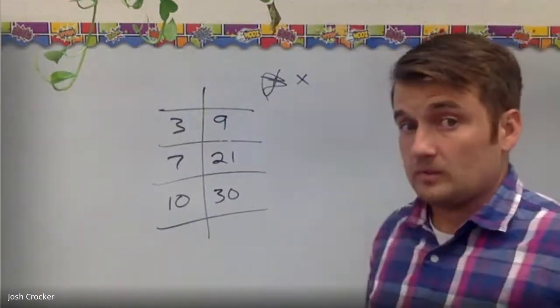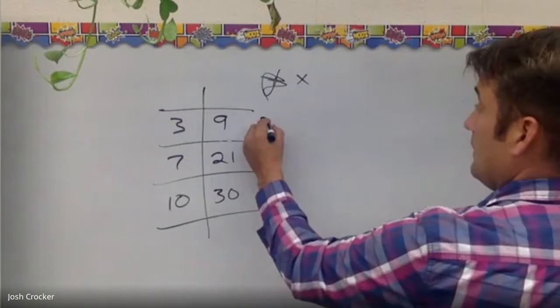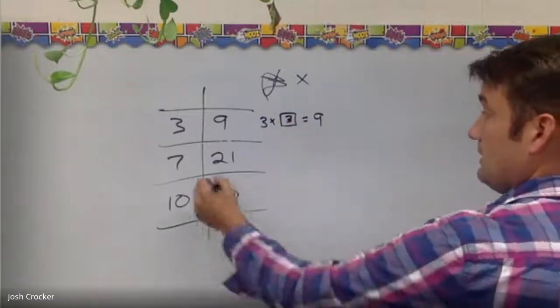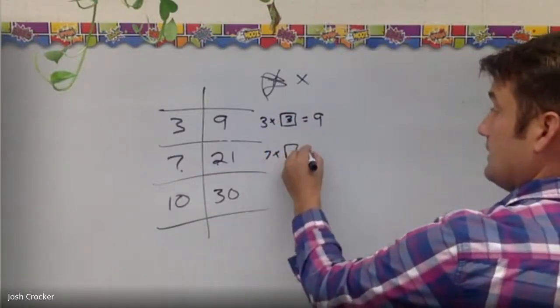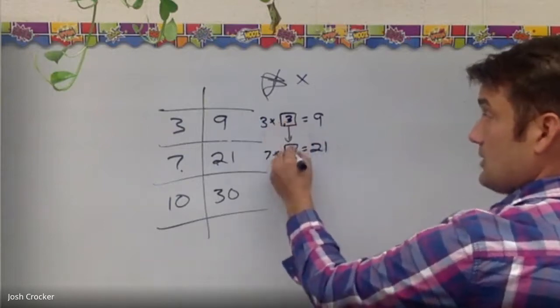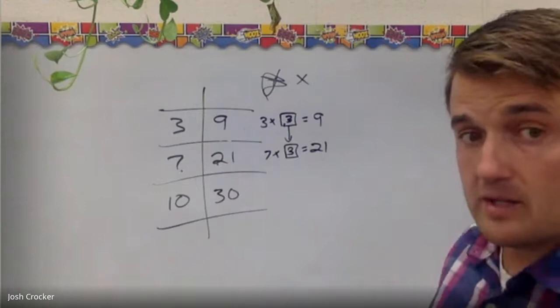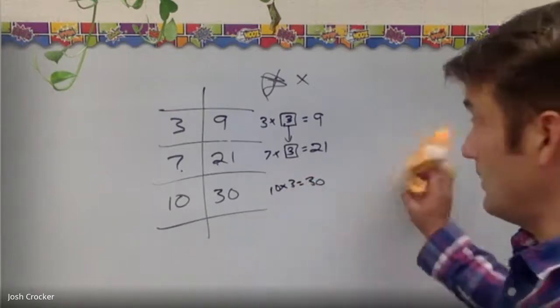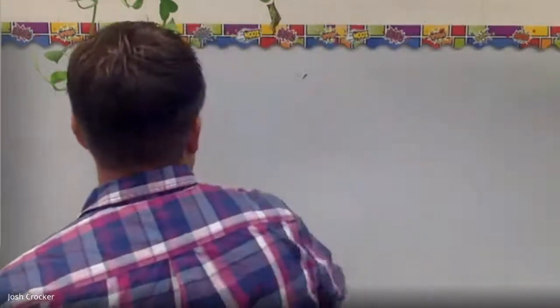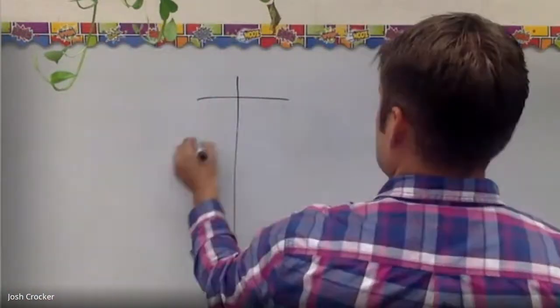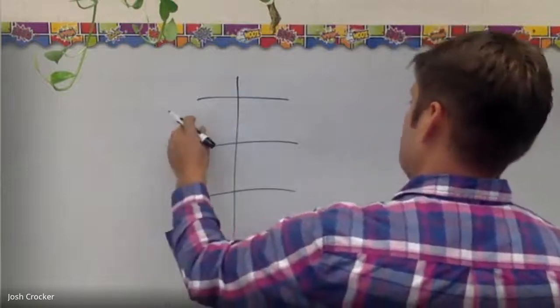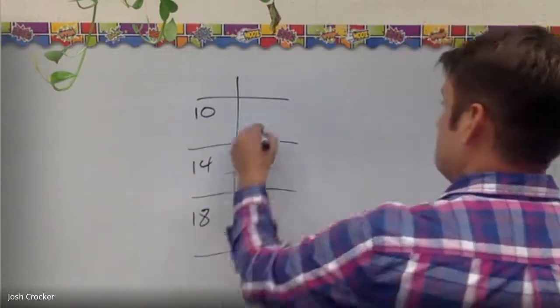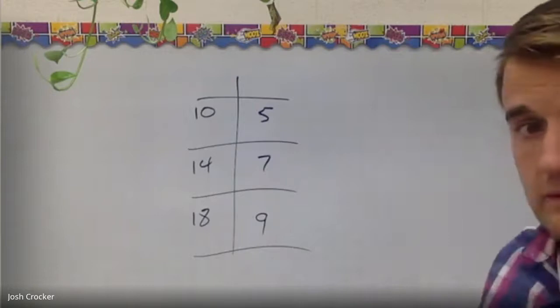So now I know I'm working with multiplication. So 3 times something makes 9 and that something is 3. What seven times something is 21? It's 21 if I'm right here it should also be 3. It is 7 times 3 is 21. 10 times 3 is 30.